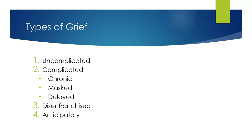Anticipatory grief is experienced before the loss even occurs. The potential negative outcome of anticipatory grief is that the survivor may detach from the dying person too early, leaving that person without emotional support. For example, a husband whose wife has a terminal breast cancer diagnosis may stop visiting, start new hobbies, and spend less and less time with her — because he has let go too soon.